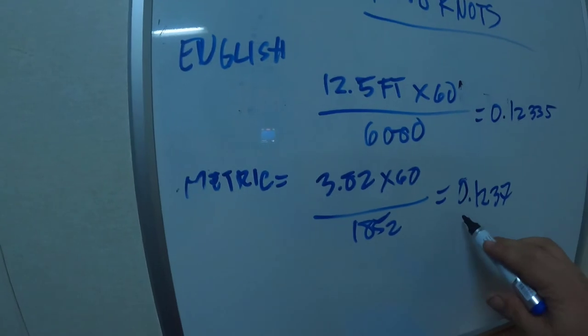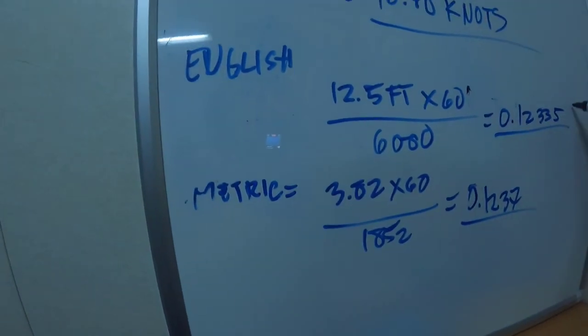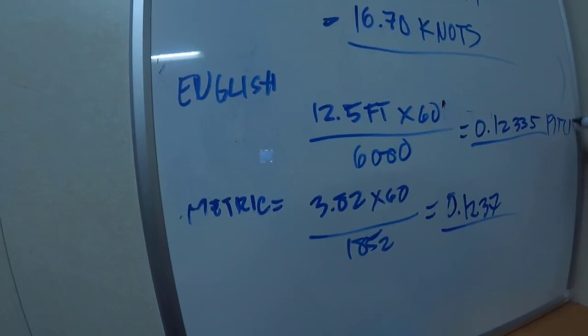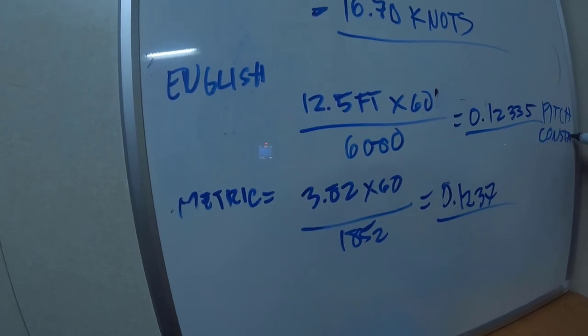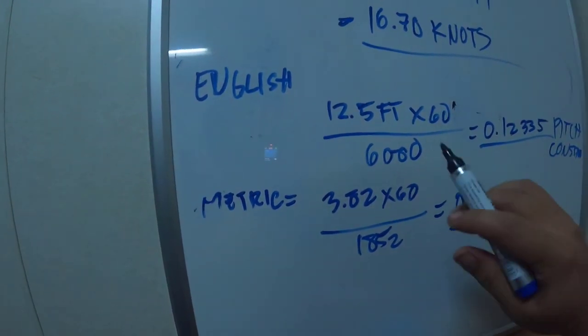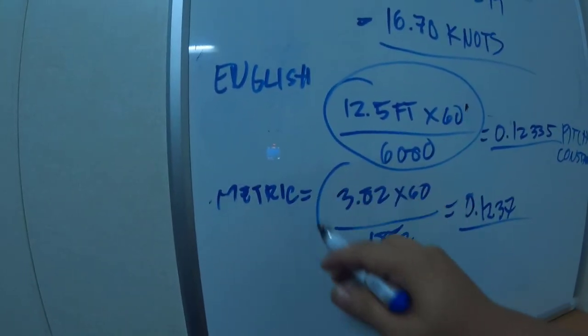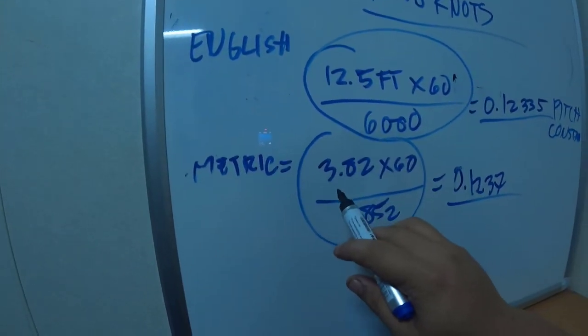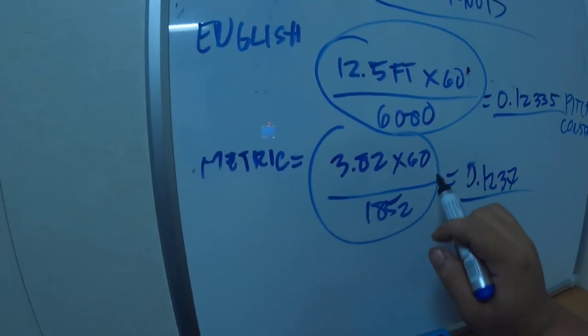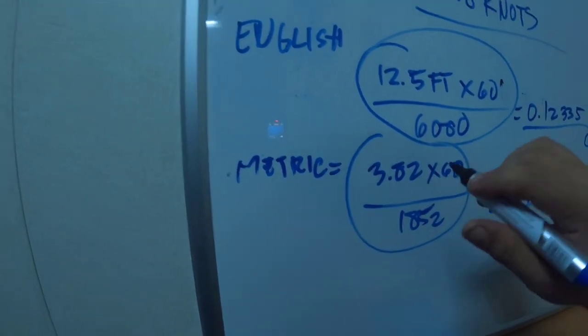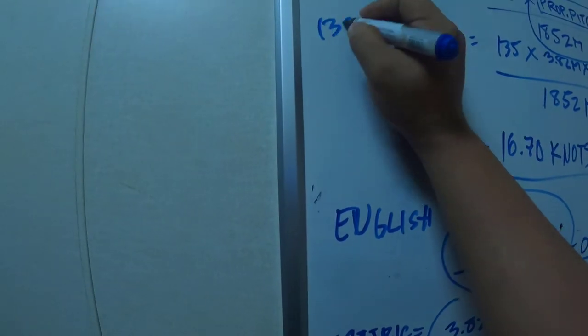This is what you'll use as the pitch constant. It's called pitch constant because it's always constant on the ship, so you don't have to compute 3.82 times 60 divided by 1852 every time. They just use the pitch constant when you have RPM.